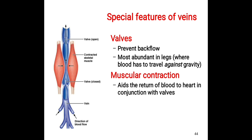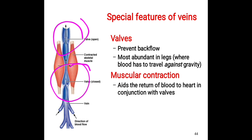Now some important information about veins. First, veins have valves that prevent backflow of blood. Since blood pressure in veins is low, the valves ensure that blood moves only upward toward the heart and cannot flow backward. This is one of two mechanisms that help move blood upward through veins.